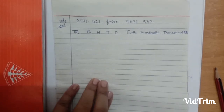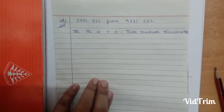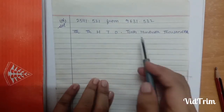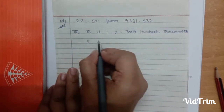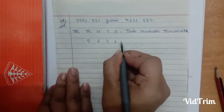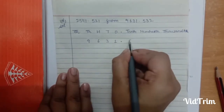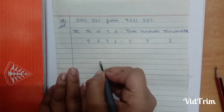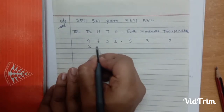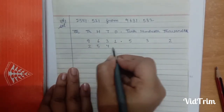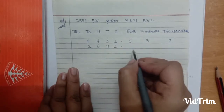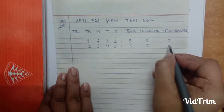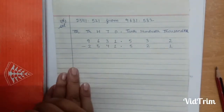Next we do part D: 2541.521 from 9631.532. So first we write 9631.532. 9 is on the thousands place, 6 is on hundreds, 3 is on tens, and 1 is on ones. Next, 2 is on the thousands place, 5 is on hundreds, 4 is on tens, and 1 is on ones. Decimal under decimal: 5 under tenths, 2 under hundredths, and 1 under thousandths. Now we do the subtraction.